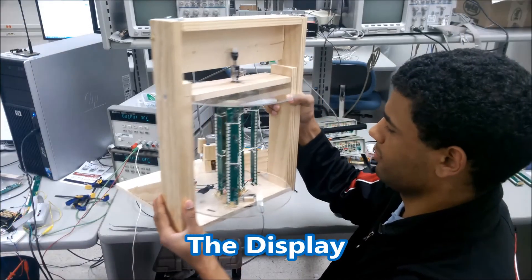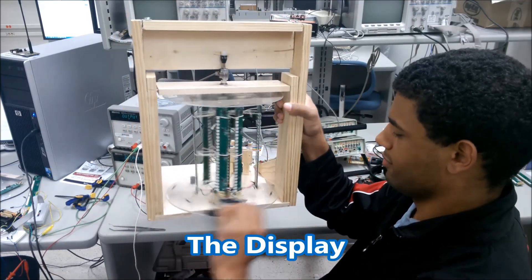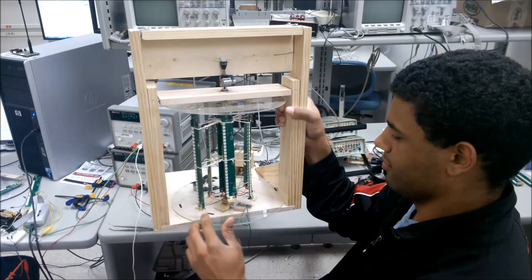Here we have the volumetric display. As you can see, it spins about a central axis, and the boards are all mounted at a different radius to give the three-dimensional effect.